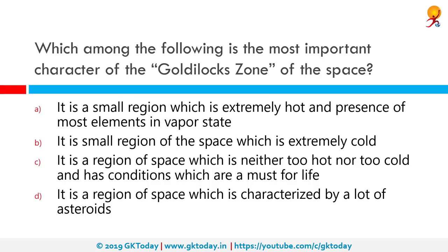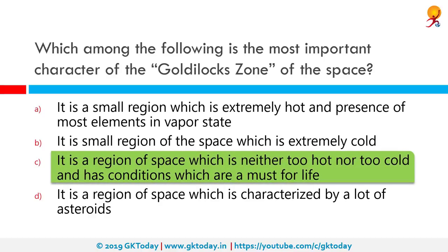Which among the following is the most important characteristic of the Goldilocks zone in space? It is a region of space which is neither too hot nor too cold and has conditions necessary for life. The Goldilocks zone refers to the habitable zone around a star where the temperature is just right — not too hot and not too cold — for liquid water to exist on a planet. Earth is within the Goldilocks zone.